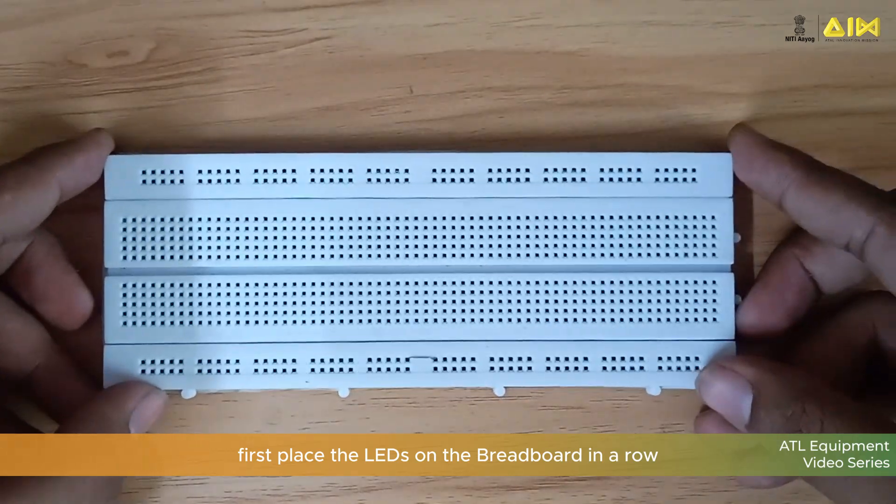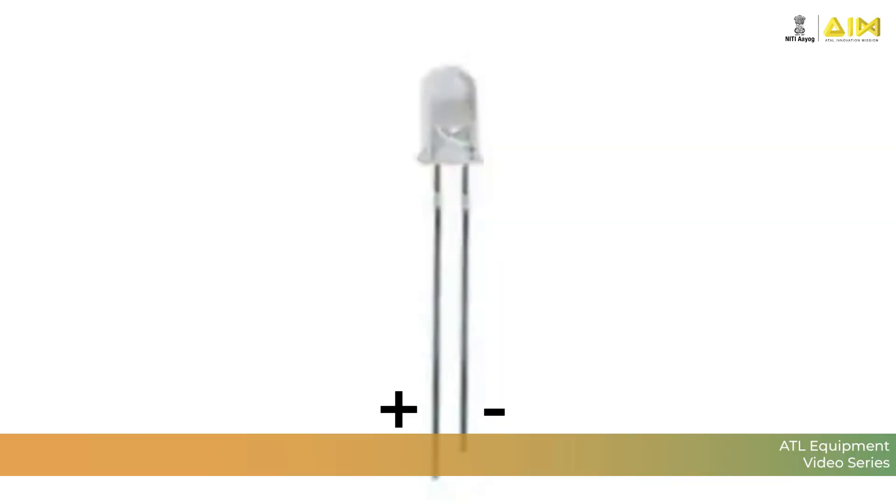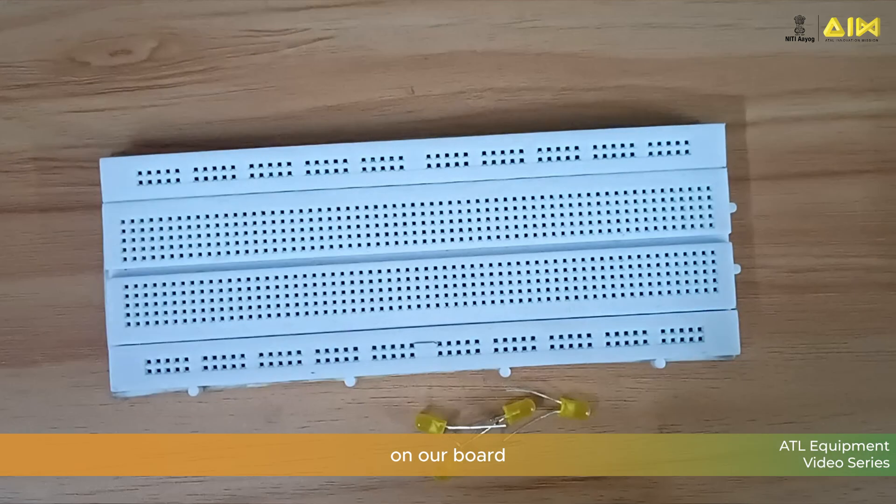First, place the LEDs on the breadboard in a row. Remember, the longer leg of each LED is the positive side which we will be connecting on our board.